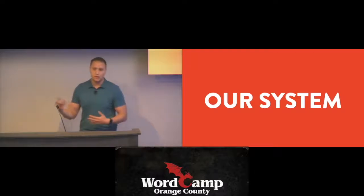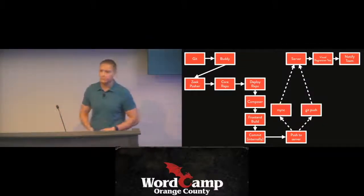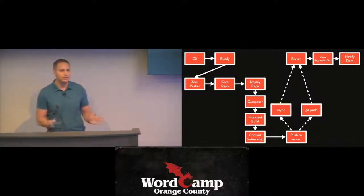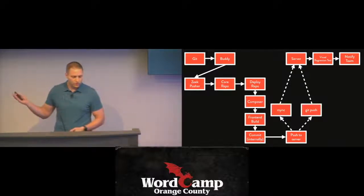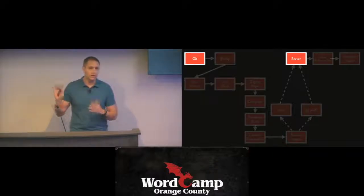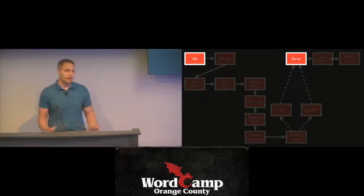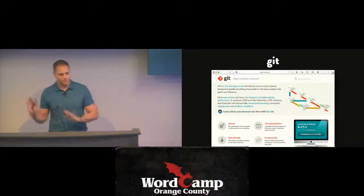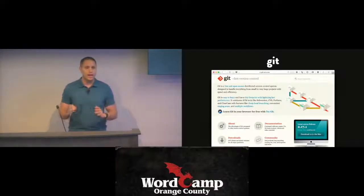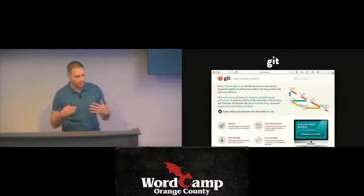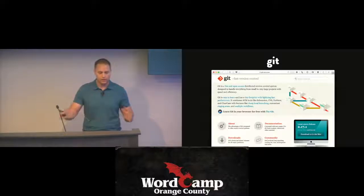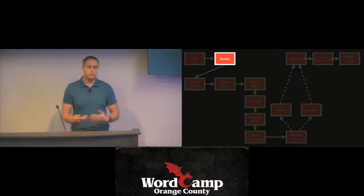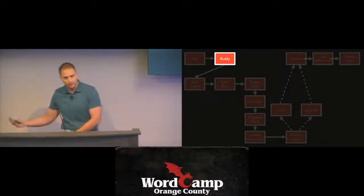I'll show an overview of our system, step by step. It looks a little bit complex, but you do the complexity now so that when you go to deploy, it's much simpler. We're trying to get code onto the server, and in our case we're using Git. I recommend using a version control system. To manage all of our deploys, we use a system called Buddy. We used to use DeployBot and have since moved on to Buddy. I considered Jenkins and a few other options, but Buddy is what we were happy with.